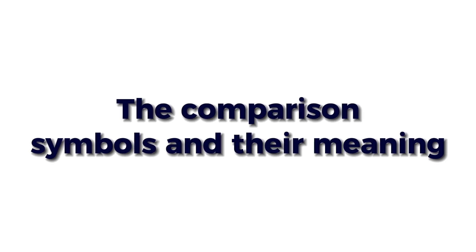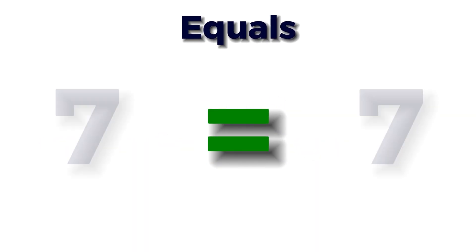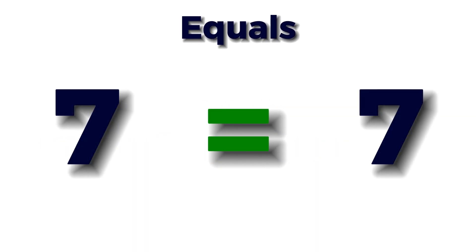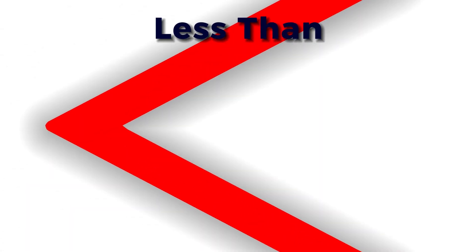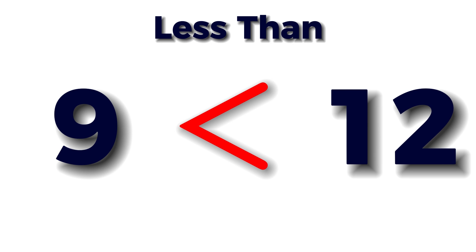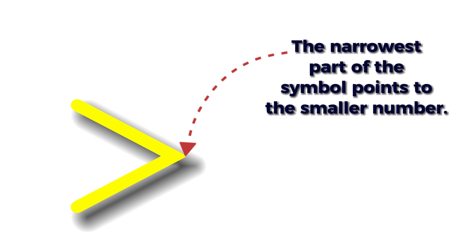We use symbols to compare numbers. These signs are called comparison symbols and we use them to compare numbers or amounts. The equal sign means the numbers are the same. The greater than sign means the number on the left is larger. The less than sign means the number on the left is smaller. To remember how to use greater than or less than, just remember to point at the smaller number — the narrowest part of the symbol points to the smaller number.